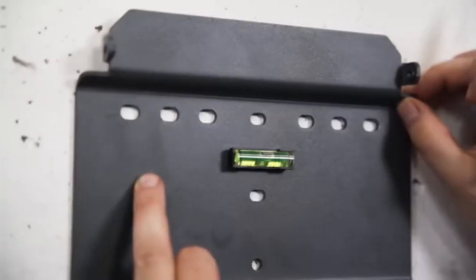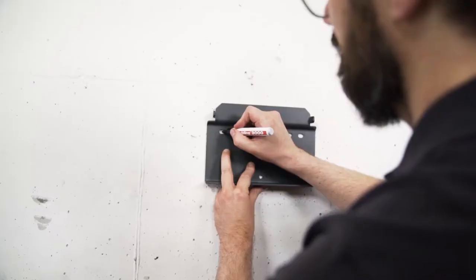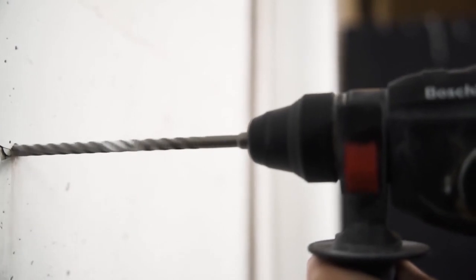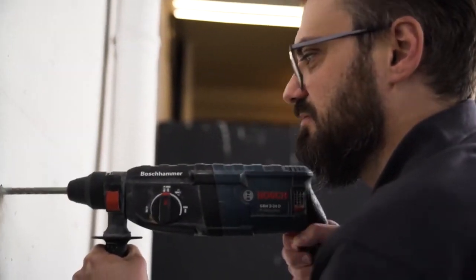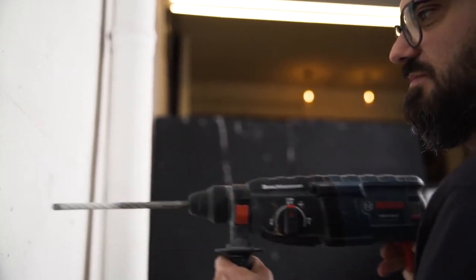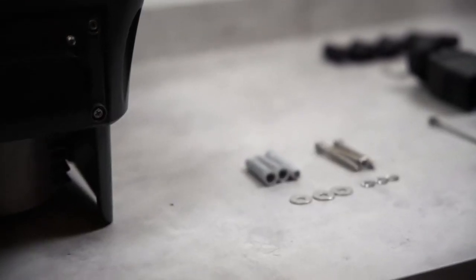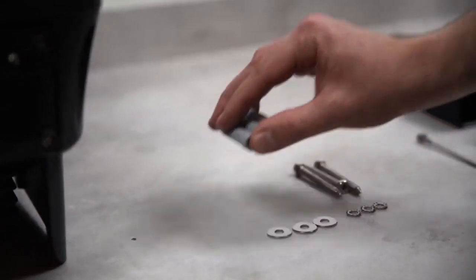Before you start drilling, you should make sure that there are no wires running through the wall that you could damage. Take your drill with the 10mm drill bit and drill at least 70mm deep into the wall at the marked points. The dowels for mounting the inverter on the wall are included in the delivery.